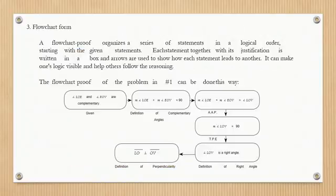The third form is known as the flowchart form. It is a proof that organizes a series of statements in a logical order, starting with the given statements. Each statement together with its justification is written in a box, and arrows are used to show how each statement leads to another. It can make one's logic visible and helps others follow the reasoning.